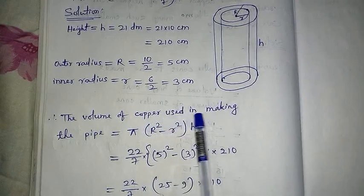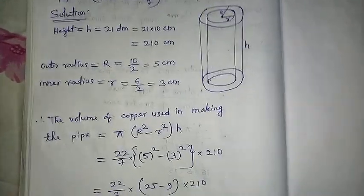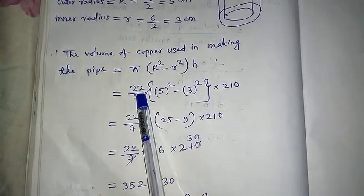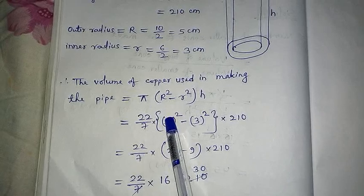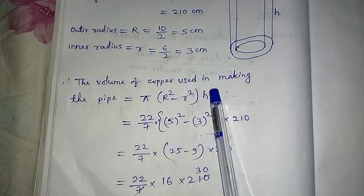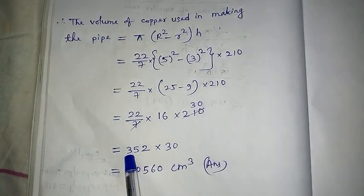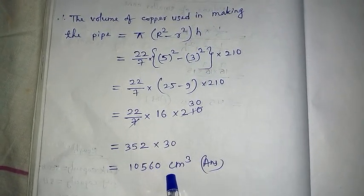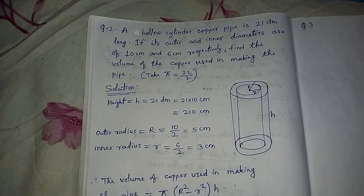Using the hollow cylinder formula: Volume = π(R² − r²)h = (22/7) × (5² − 3²) × 210 = (22/7) × (25 − 9) × 210 = (22/7) × 16 × 210. After cancellation: 22 × 16 × 30 = 10,560 cm³. So the volume of copper used is 10,560 cm³. Try to watch this video and understand the concept. Thank you, children.